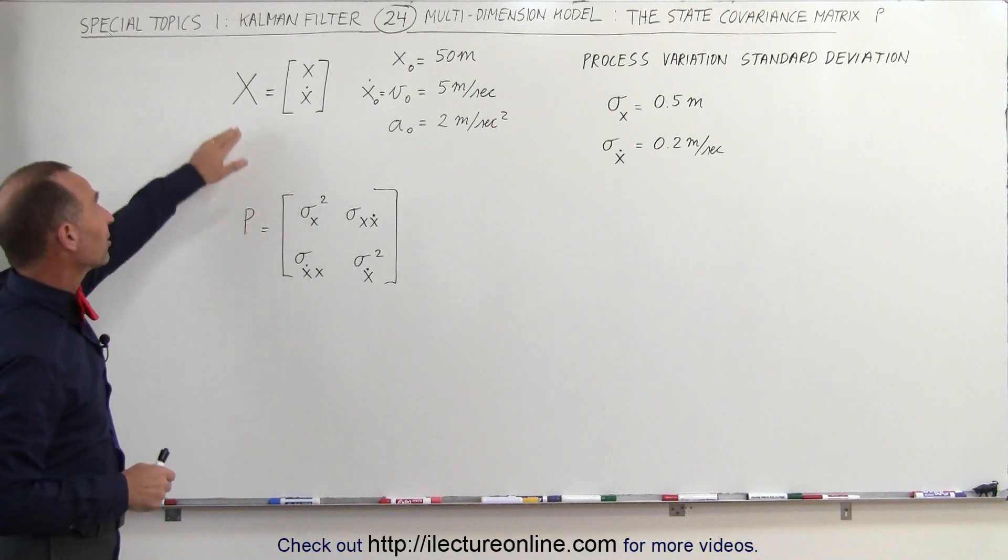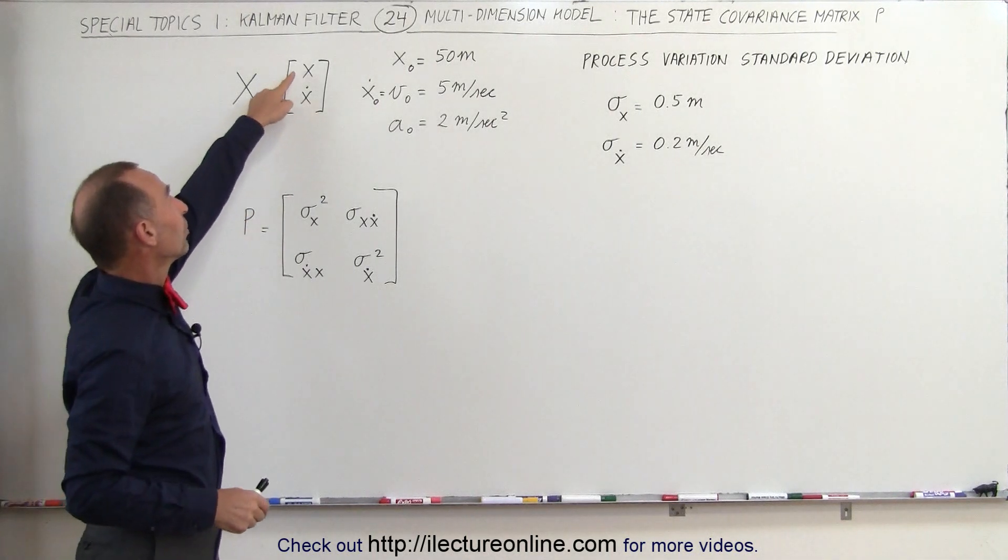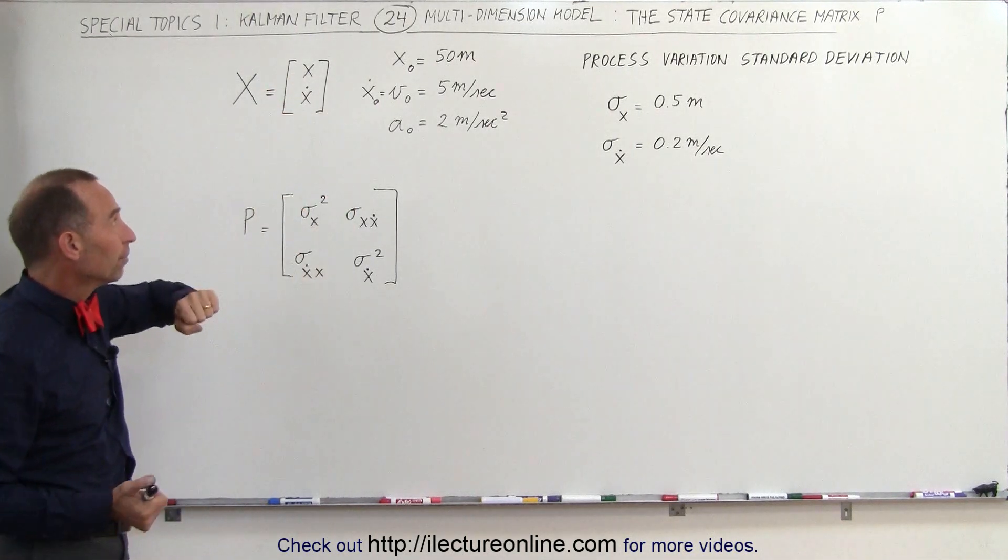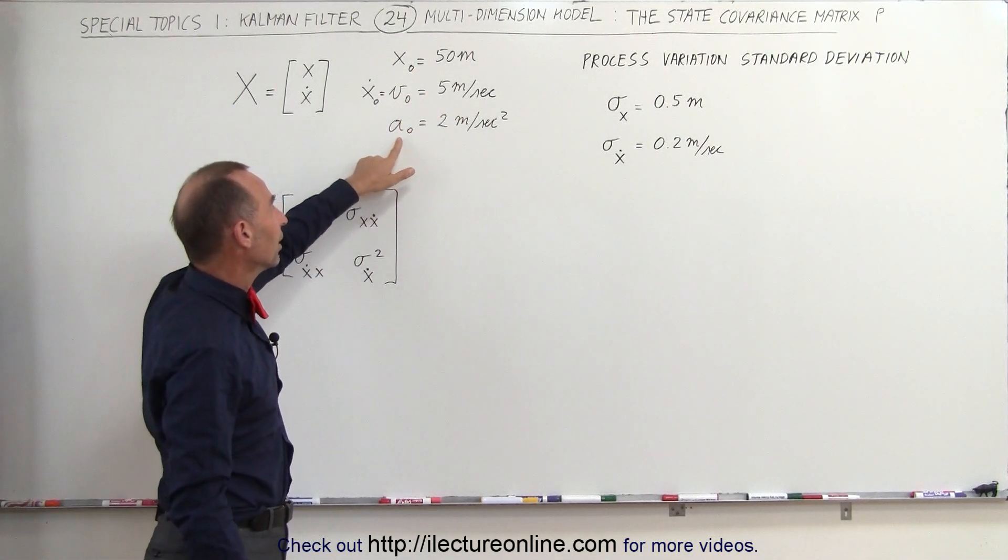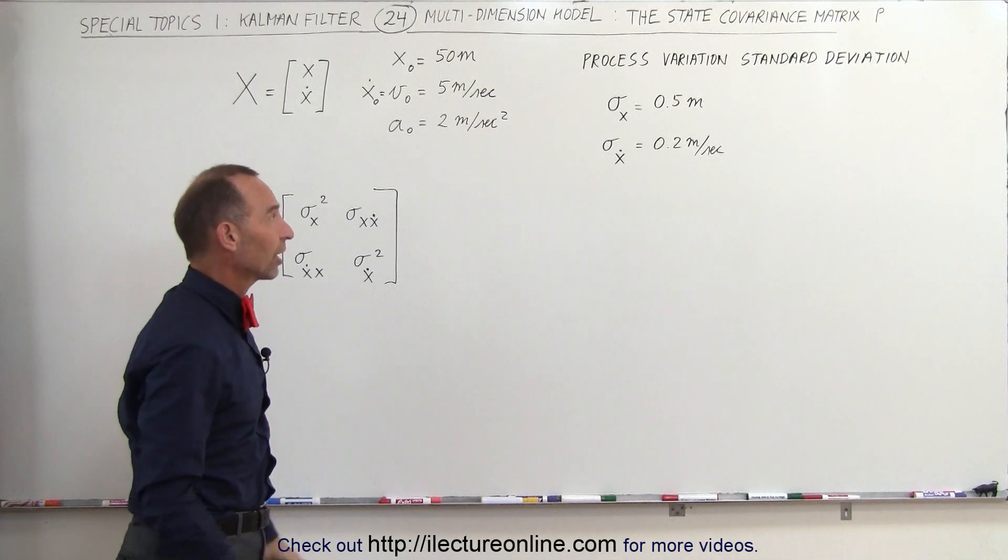We have a state matrix that has both the position and the velocity in the x direction. Let's say that the initial position was 50 meters, the initial velocity was 5 meters per second, and the initial acceleration was 2 meters per second squared.